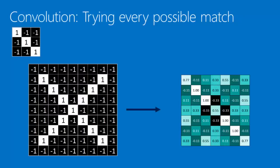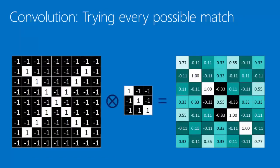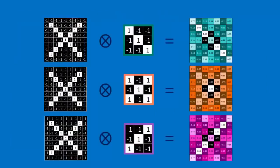Looking at it, it makes sense. This feature is a diagonal line slanting downward left to right, which matches the downward left-to-right diagonal of the X. Looking at our filtered image, we see that all of the high numbers — ones and 0.77s — are all right along that diagonal. That suggests the feature matches along that diagonal much better than it does elsewhere in the image. Using a shorthand notation, we'll do a little X with a circle in it to represent convolution — the act of trying every possible match — and we repeat that with other features.